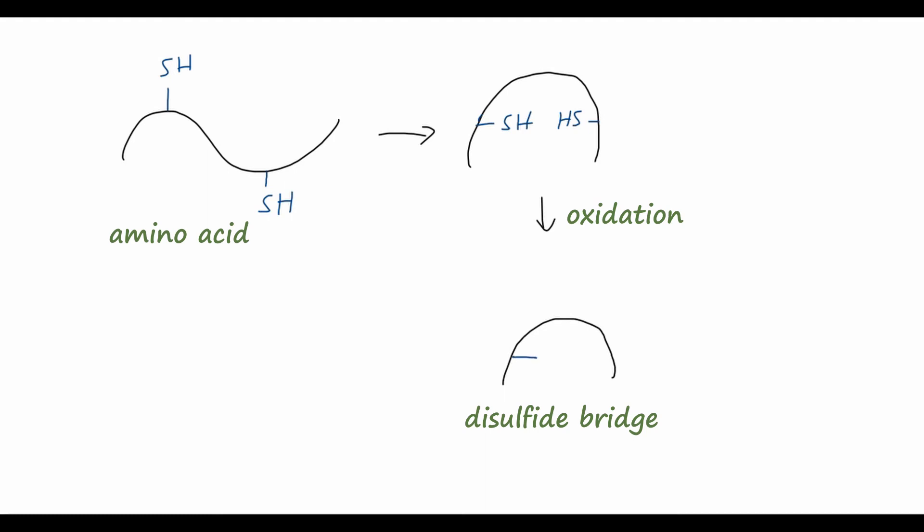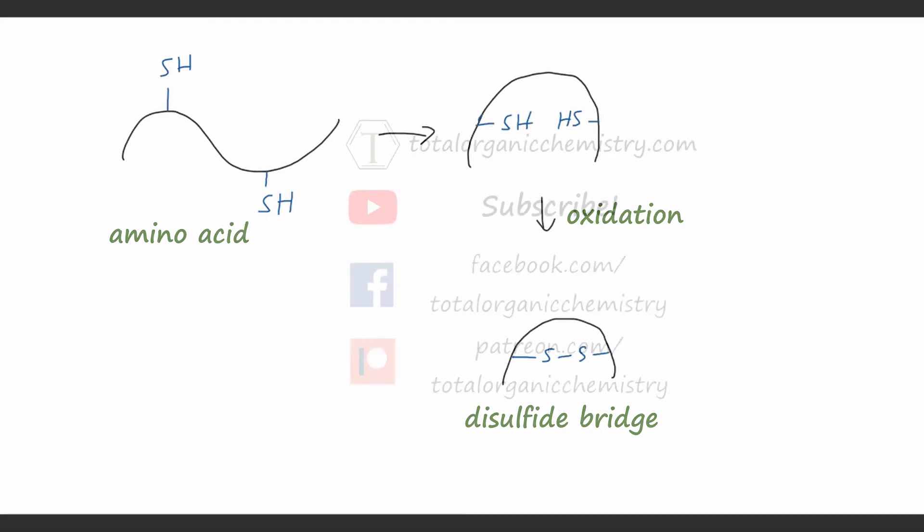And disulfides are very important in our biochemistry, because we can have just a simple cartoonish drawing of an amino acid here, where we have just this long chain of an amino acid. And we might have these thiol groups, for example in cysteine. And if we twist this amino acid up so that the SH groups are aligned together, we can perform an oxidation reaction, where this turns into a disulfide. So using very similar chemistry to what I just described, we can make what's called a disulfide bridge. And that's very important for the structure of amino acids in your body chemistry.